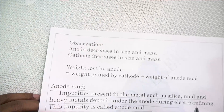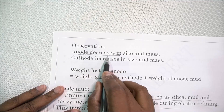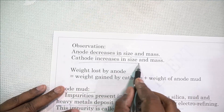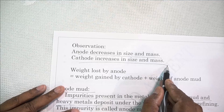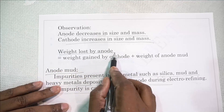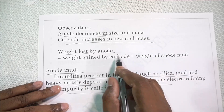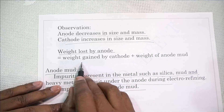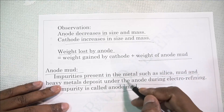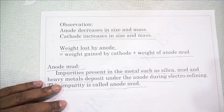The observation here: the anode decreases in size and mass, while the cathode increases in size and mass. One important point to note: the weight lost by the anode is NOT equal to the weight gained by the cathode alone. It is equal to the weight gained by the cathode plus the weight of the anode mud — the impurities must also be added for the equation to balance.